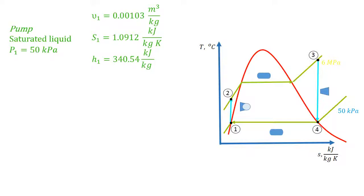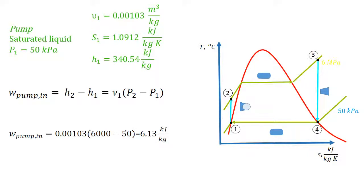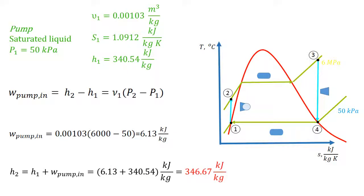Now let's find the work done in the pump using the following formula. Using the specific volume and pressure 1 and pressure 2, the work done in the pump is 6.13 kJ per kg. The enthalpy in stage 2 is 346.67 kJ per kg.